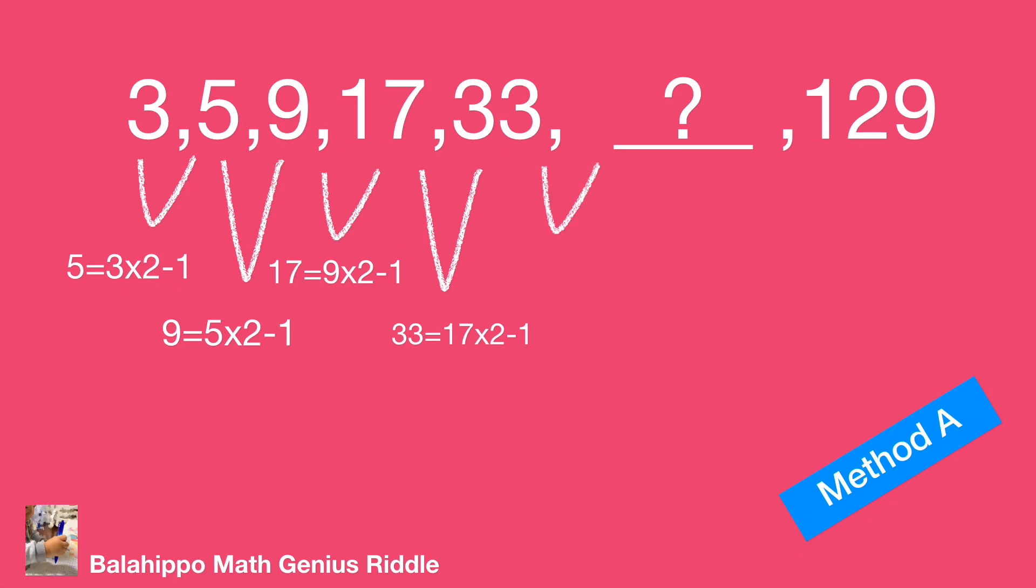Same patterns show in 17 and 33. So, the missing number will be 33 times 2 minus 1, equal to 65.